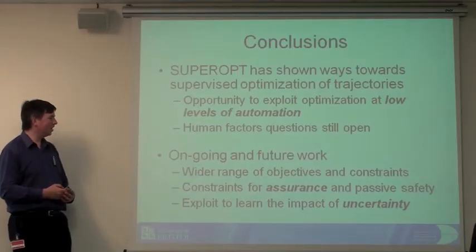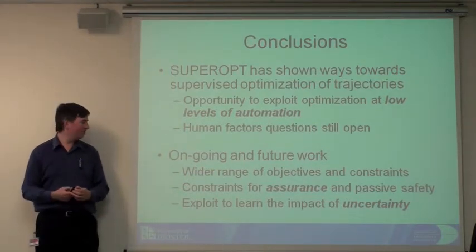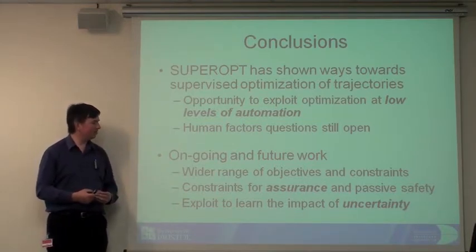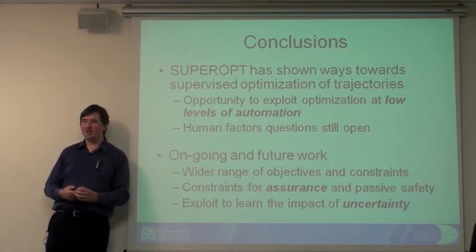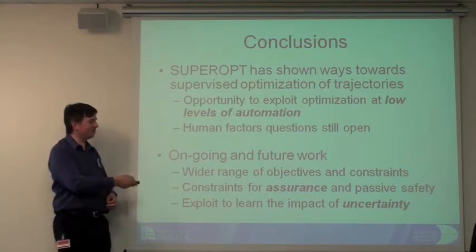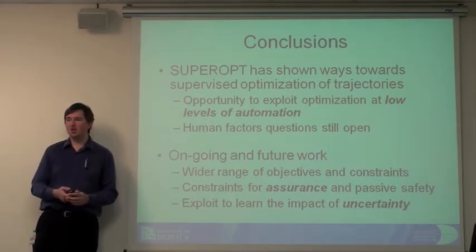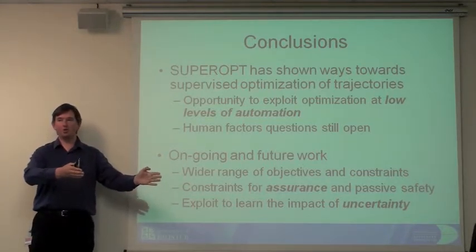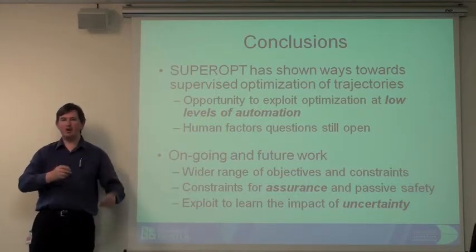In terms of future work, we want to work with a wider range of objectives and constraints, including bringing in noise and emissions models. We also want to change our separation constraint models so it's not just that there is separation but that it looks like there will be separation - a slightly stronger requirement. There's a nice link with what we call passive safety in spacecraft control, where you ensure that even if you turn everything off and aircraft kept going where they're going, there would be no problem. We can put that in with ideas about projecting forward and backwards in time.